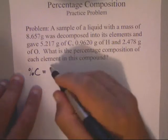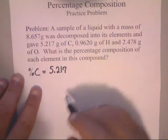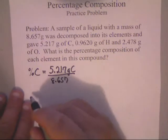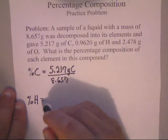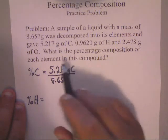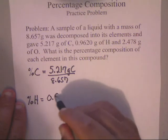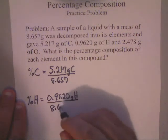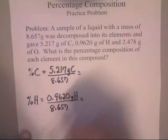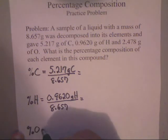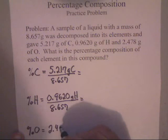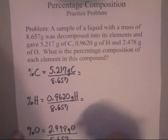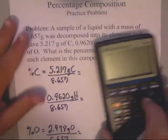To figure out percentage of carbon, we take 5.217 grams of carbon and divide it by the total of 8.657. To get the percentage of hydrogen, we take 0.9620 grams of hydrogen and divide it by 8.657 again. We do the same thing for percentage of oxygen: take 2.478 grams of oxygen and divide it by 8.657.